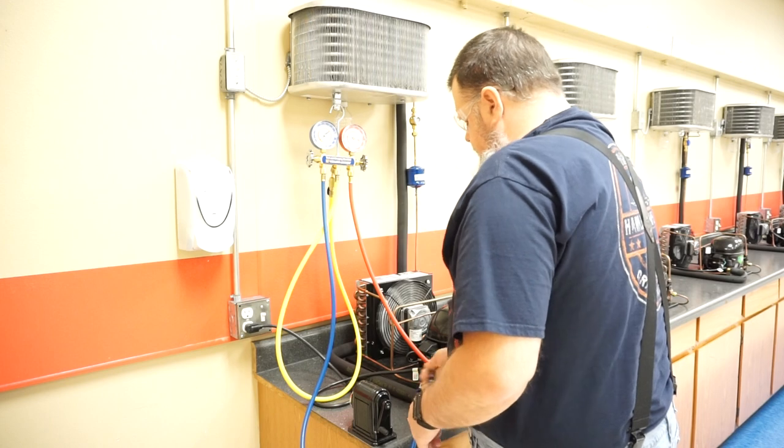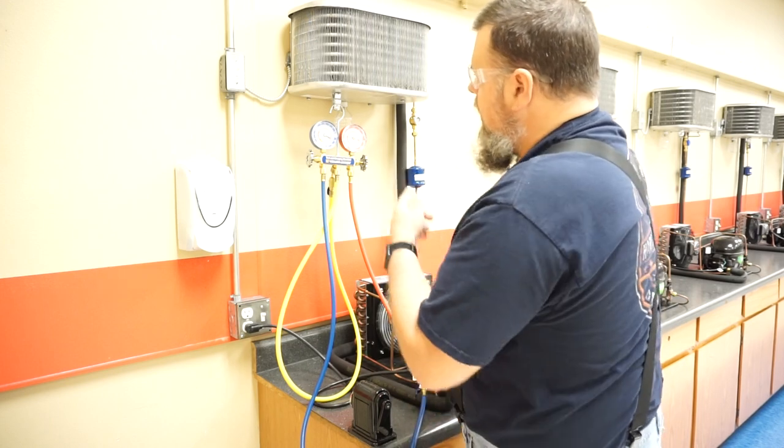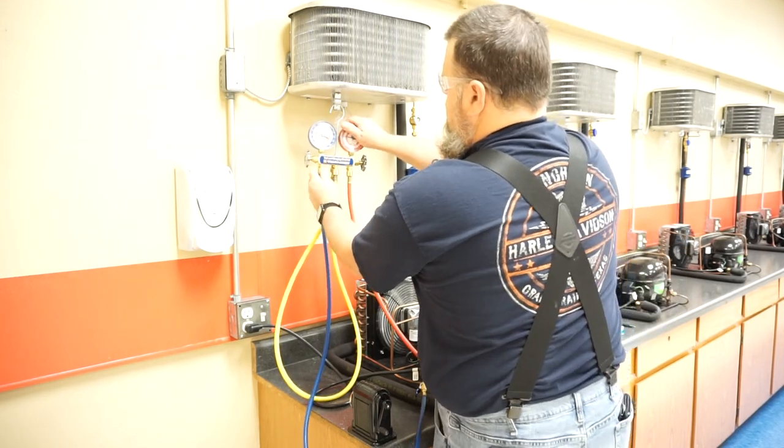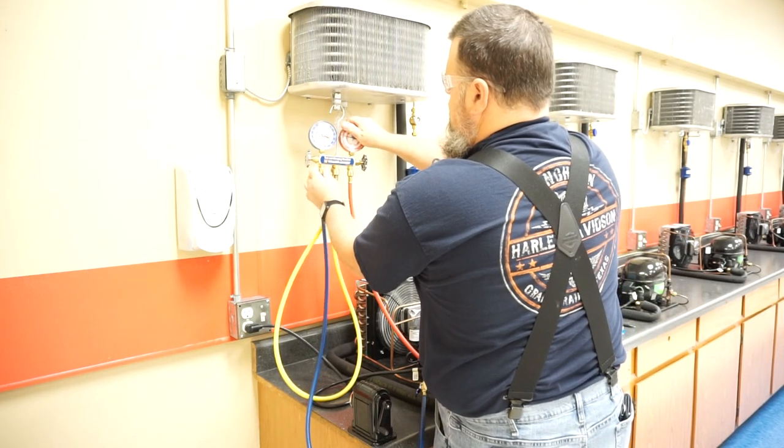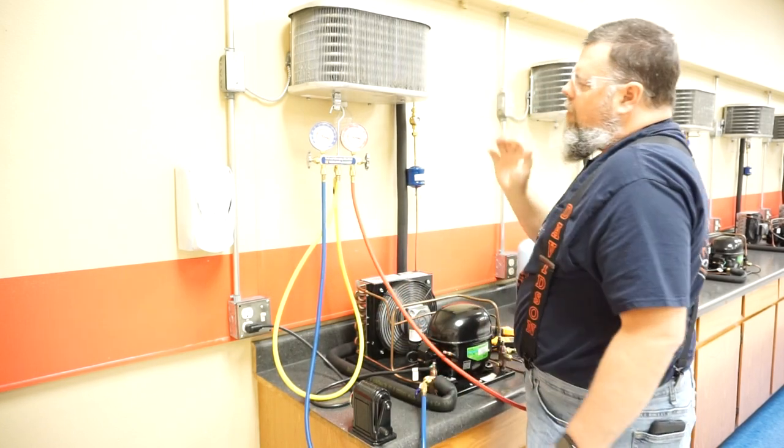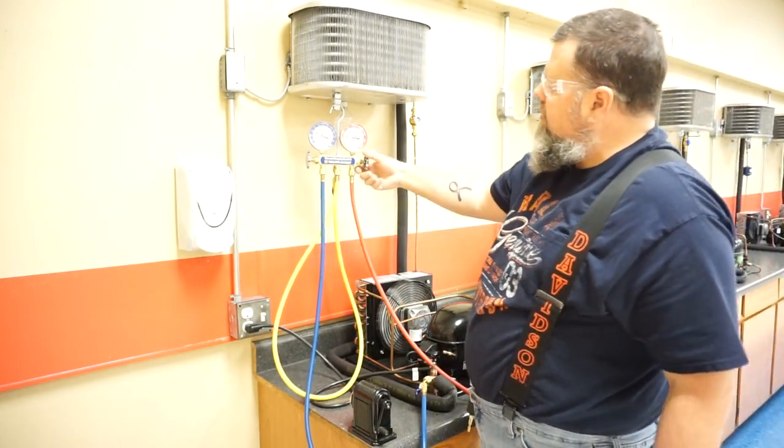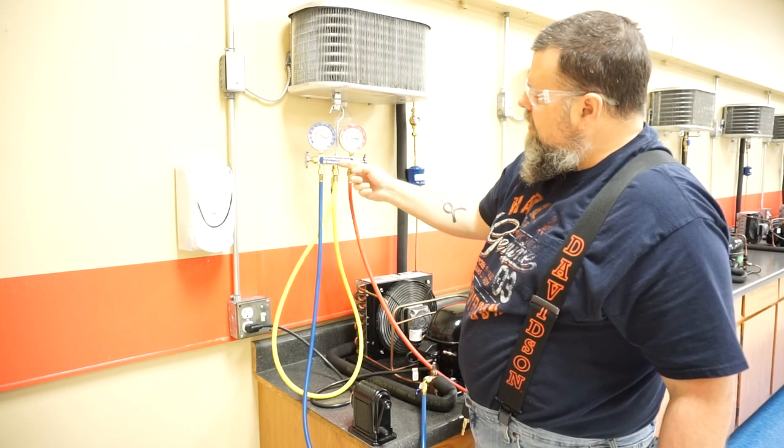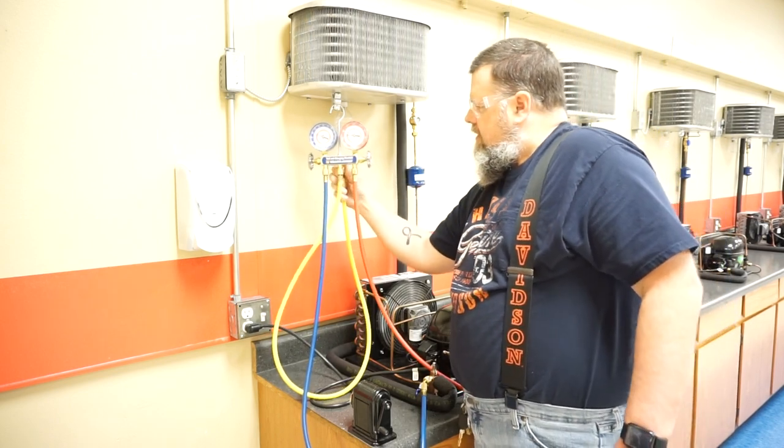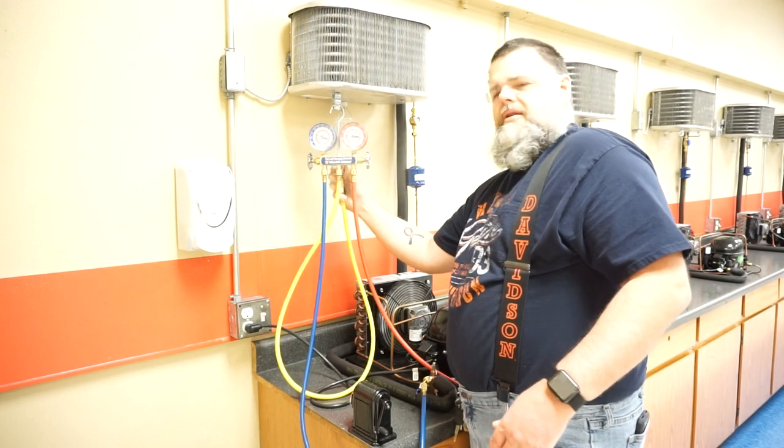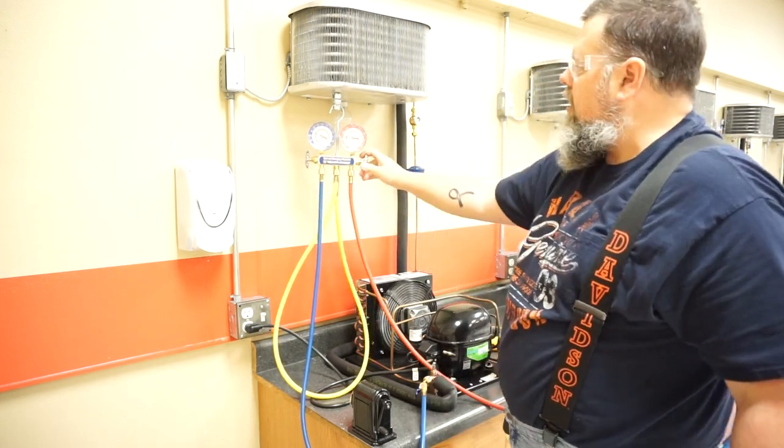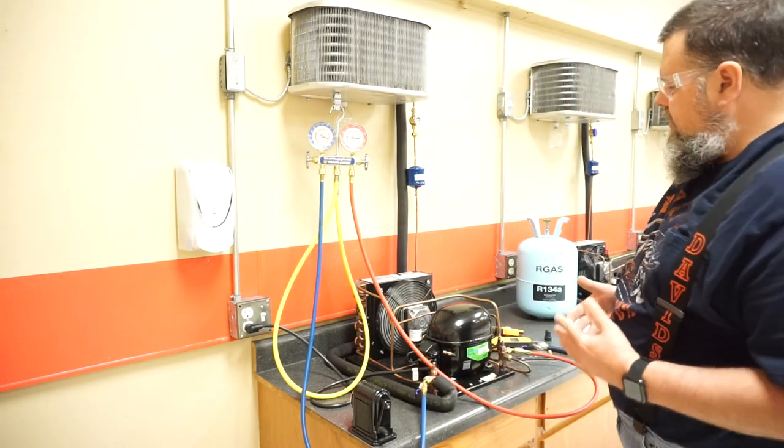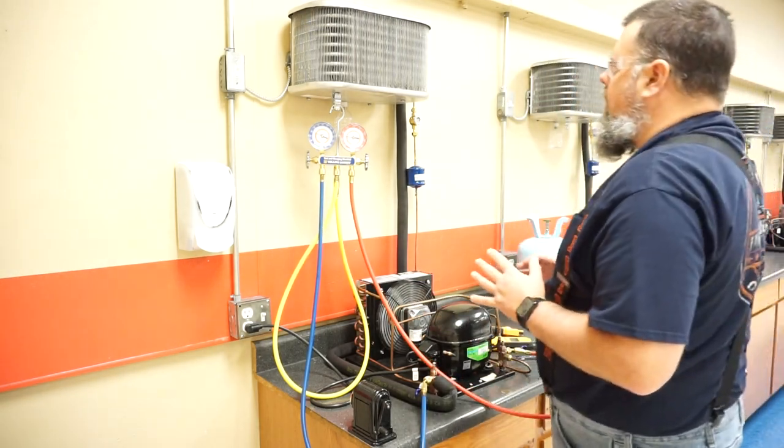I'm going to open this one up. Now I can see my low side pressure. I'm going to go ahead and purge this. Now I want to purge this yellow line. So I'm going to open this up for a split second, get a little bit of refrigerant inside here. That's all I need, just a quick, that is called a diminished amount. We want to make sure we have no air in the system.